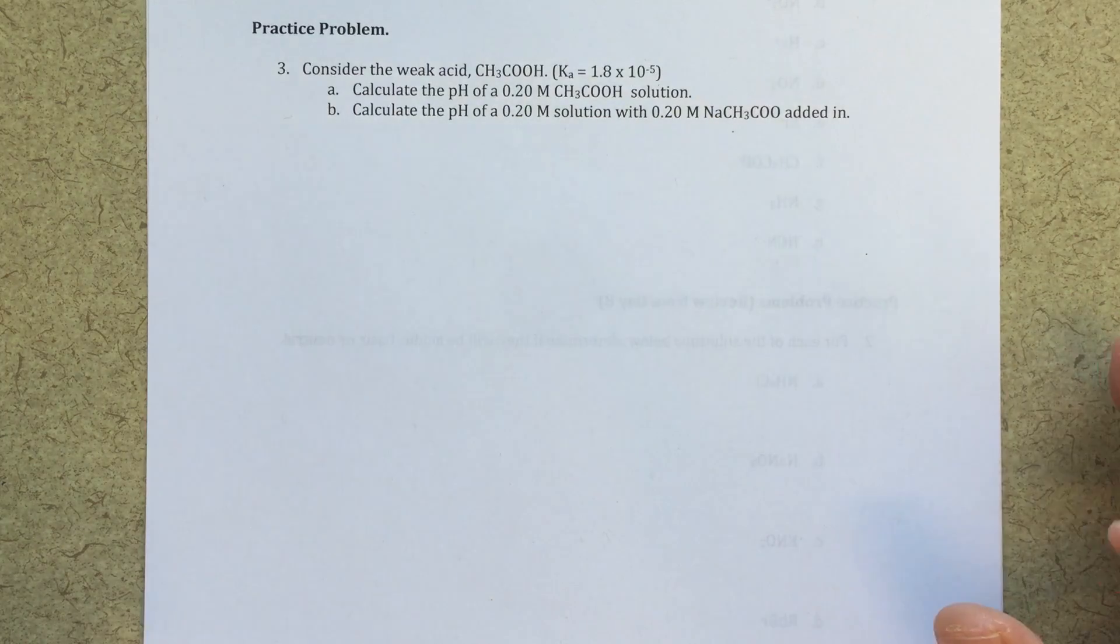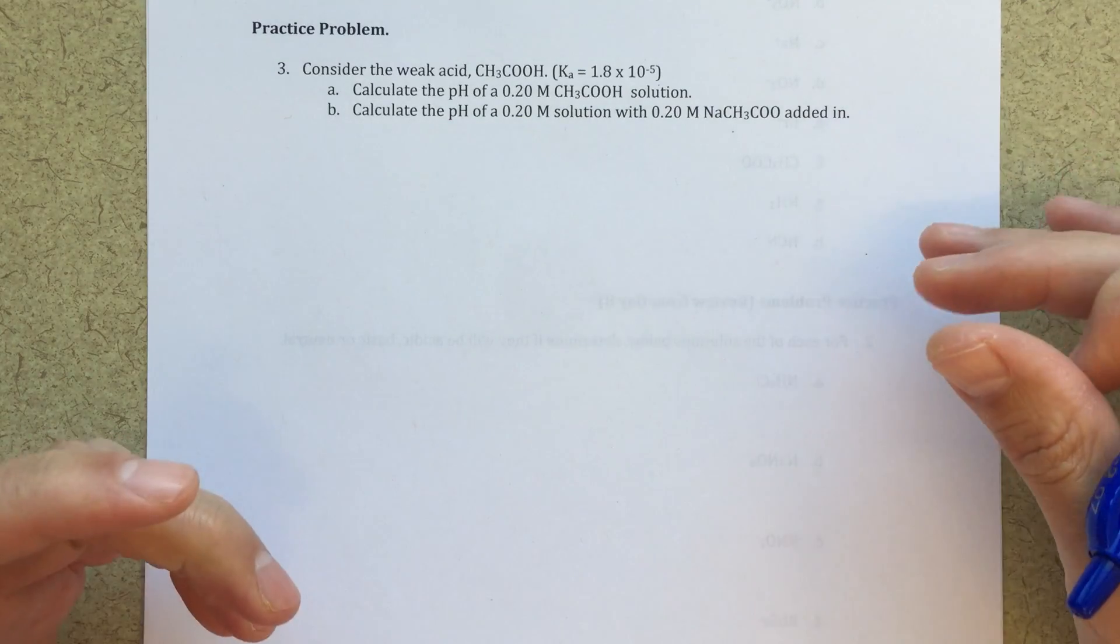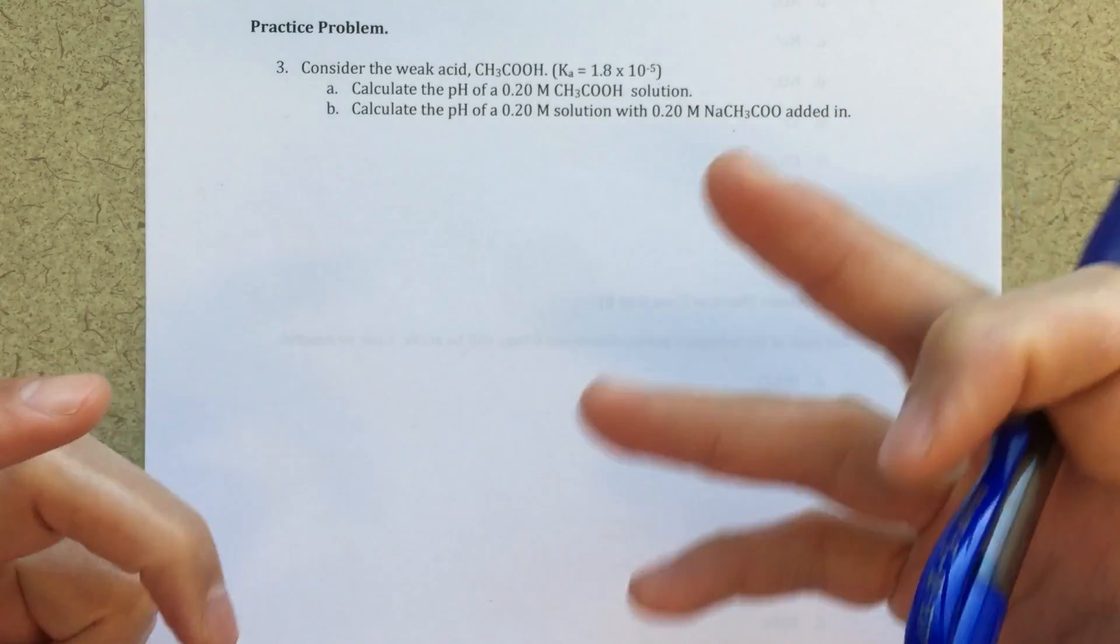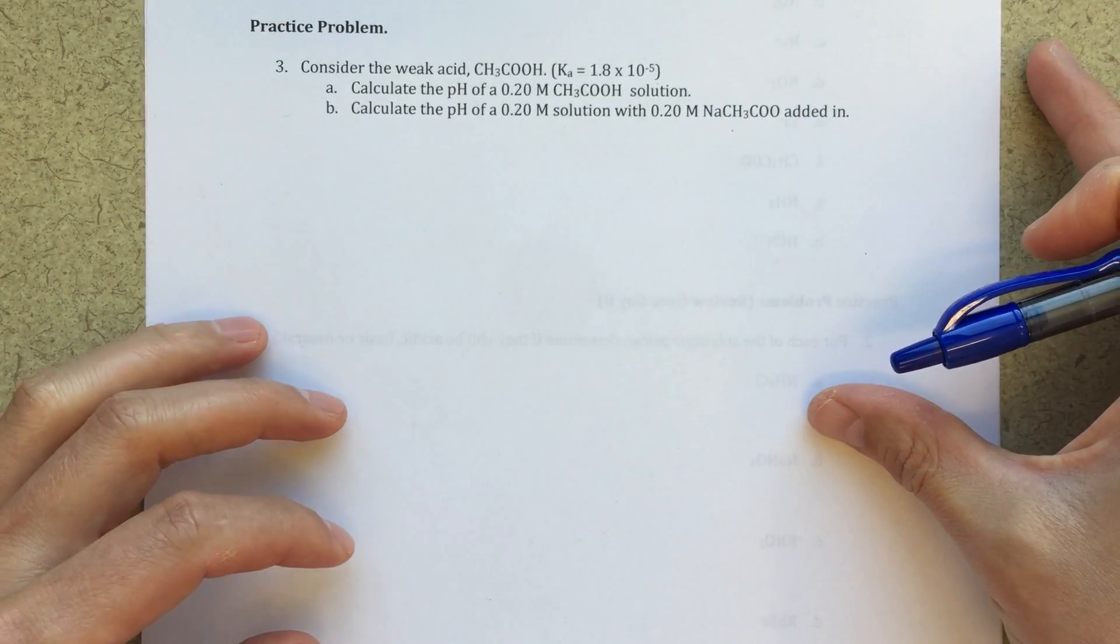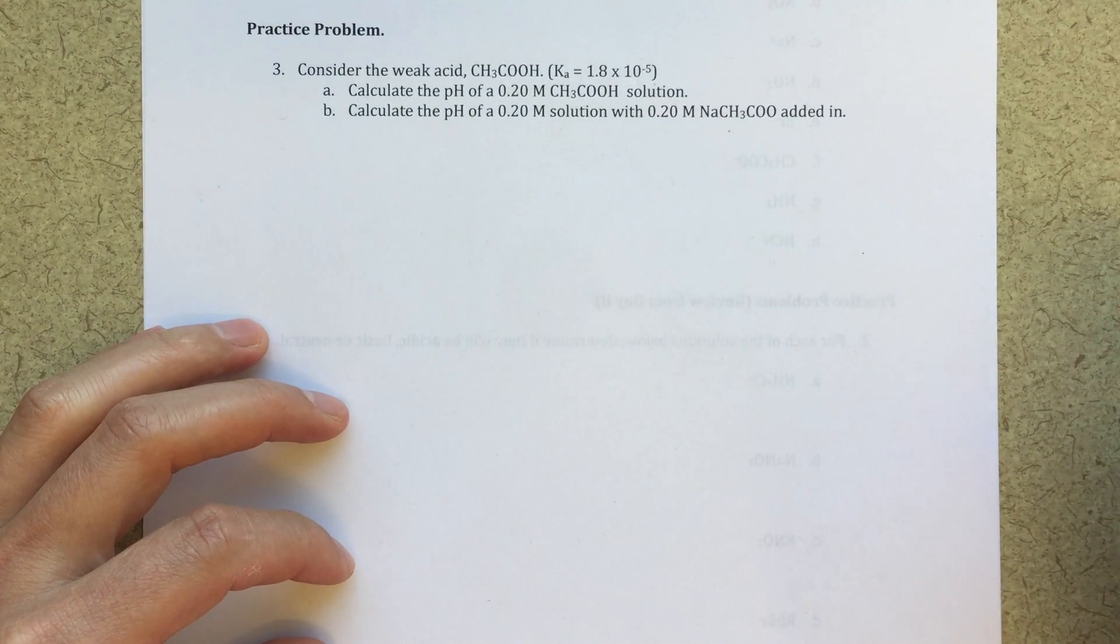Alright class, so this is a topic that's really called the common ion effect, and really what it's getting us into is the discussion of buffers. This practice problem is really just going to start to get us into this idea of what's going to happen with the common ion effect and really get us thinking about Le Chatelier's principle once again.